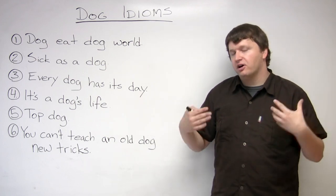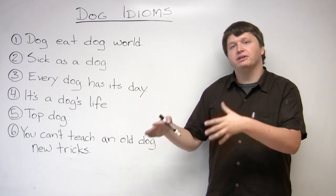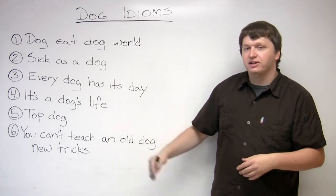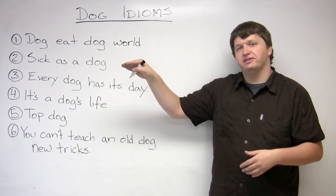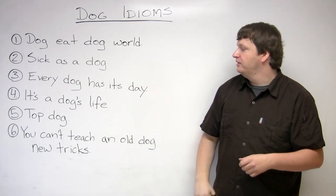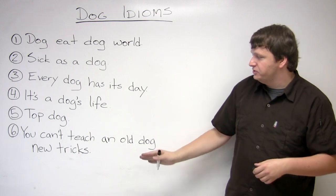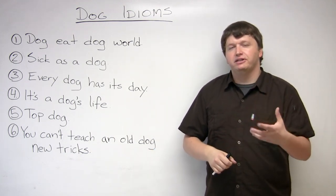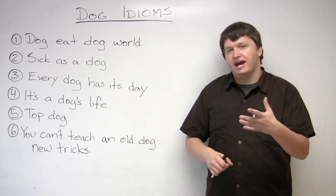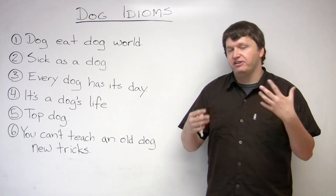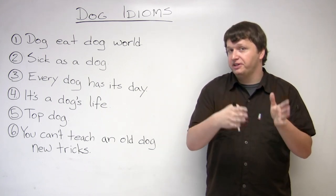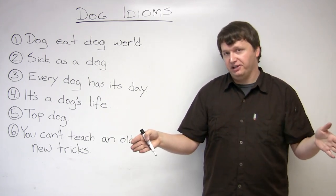It's a dog's life. It's a hard, unpleasant, cruel life. Top dog means the top person in a particular category. And you can't teach an old dog new tricks. It just means it's very difficult for a person to change their habits and behaviors if they've been doing them in one particular way almost all of their lives.